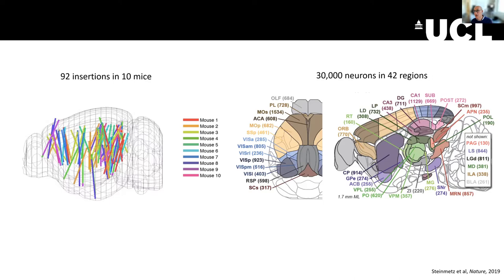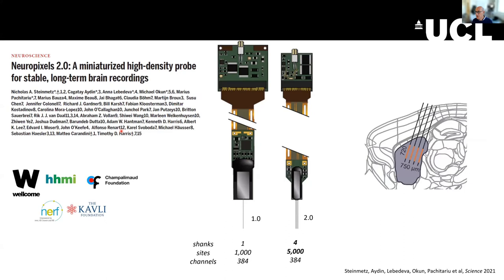A few years later we published a paper going from Neuropixels 1.0 to 2.0. The biggest change is that there are now four shanks, and the number of sites has gone to 5,000, although you still need to choose 384 of them. With this configuration you can choose, for example, if you're interested in the striatum of the mouse, you insert the probe and select the sites in that region, giving you a large number of recorded sites from the striatum.